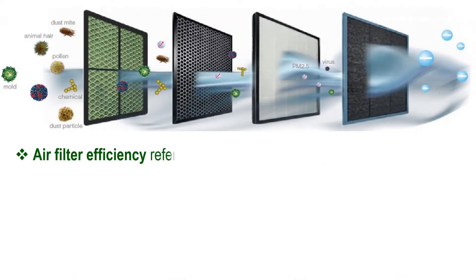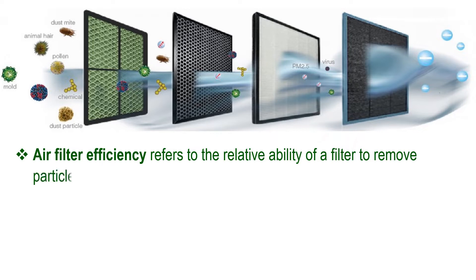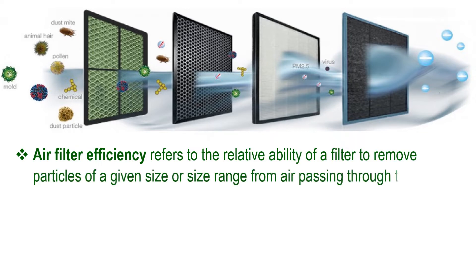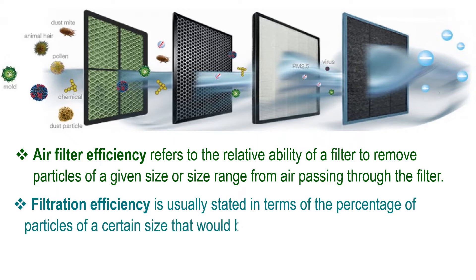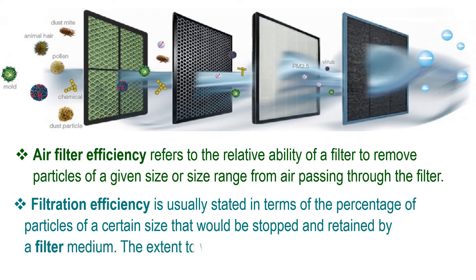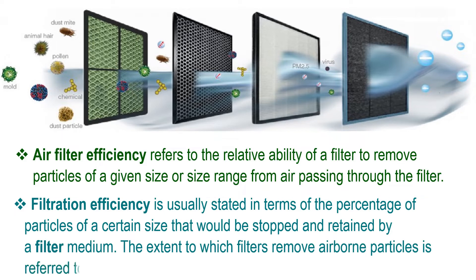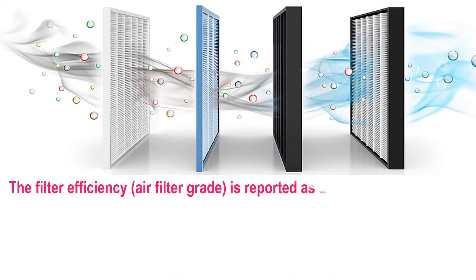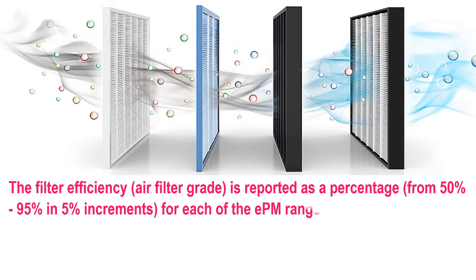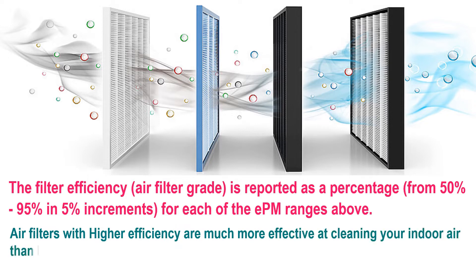HVAC air filter efficiency refers to the relative ability of a filter to remove particles of a given size or size range from air passing through the filter. Filtration efficiency is usually stated as the percentage of particles of a certain size that would be stopped and retained by a filter medium. The filter efficiency or air filter grade is reported as a percentage from 50% to 95% in 5% increments for each of the EPM ranges. Air filters with higher efficiency are much more effective at cleaning your indoor air than lower efficiency types.